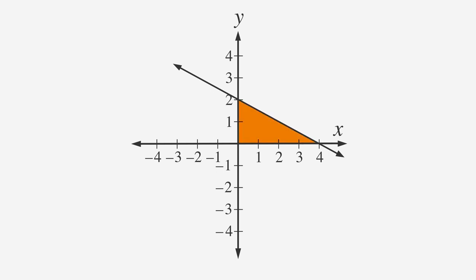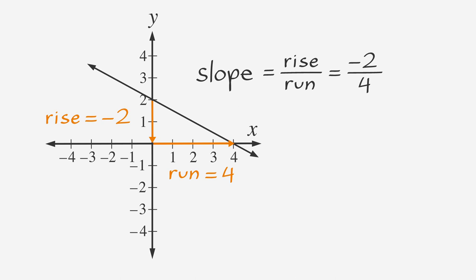Now, we can apply the formula for slope. Slope equals rise over run. The rise is how far a line goes up or down on the y-axis. In this case, the rise is negative 2, and the run is how far the line moves along the x-axis. So, we have negative 2 over 4, which we can simplify to negative 1 half.